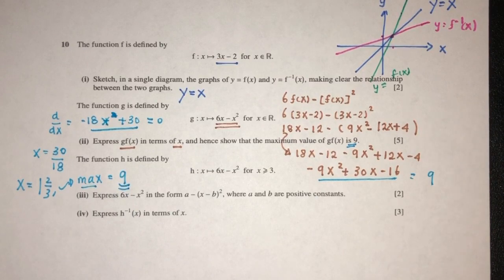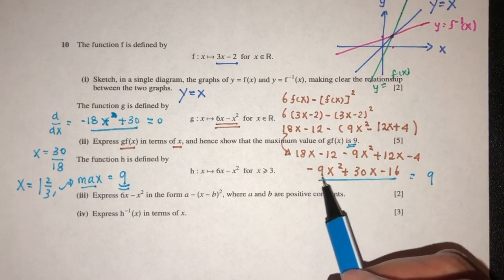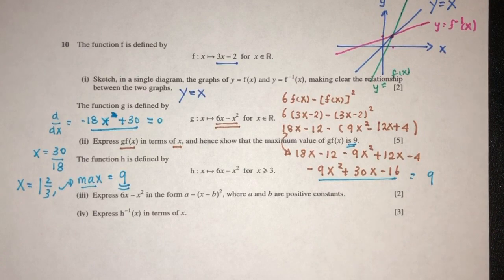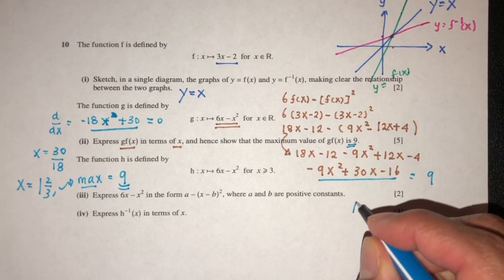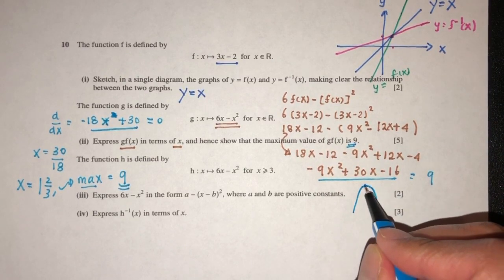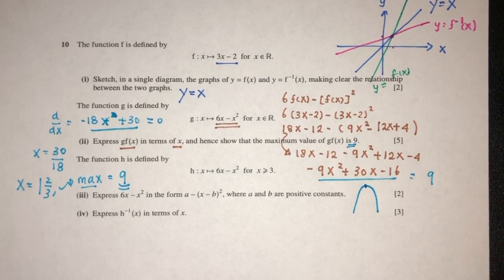But how do we know it is a max value? Because the coefficient of x squared is minus 9, which means it is going to have a shape like this. This will be the maximum point. So shown as required.